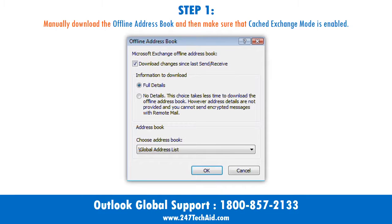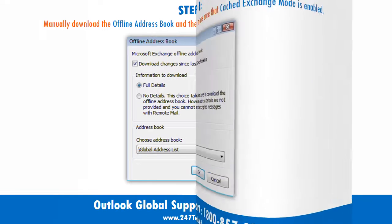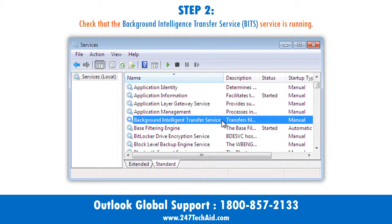Step 1: Manually download the offline address book, and then make sure that cached exchange mode is enabled.